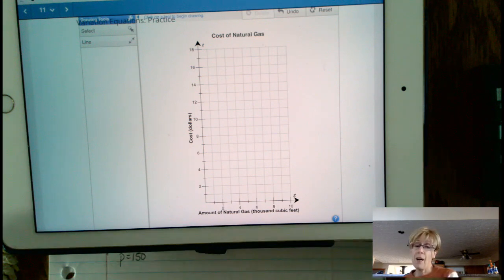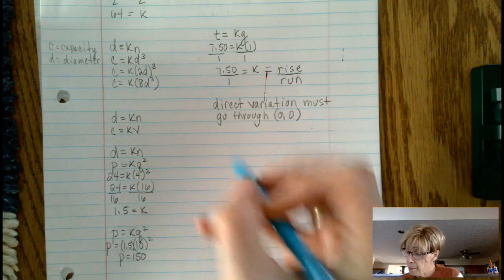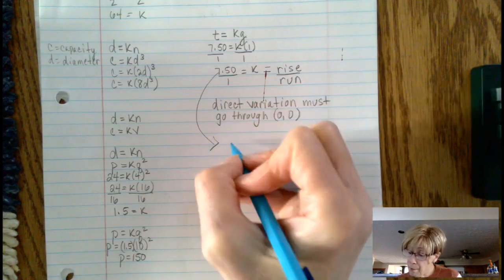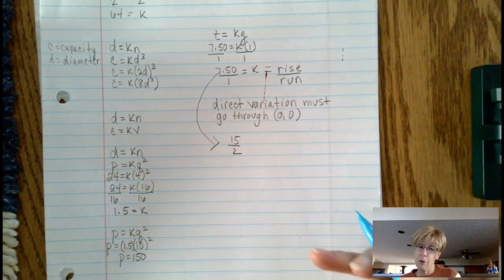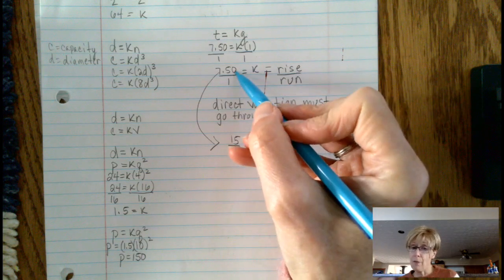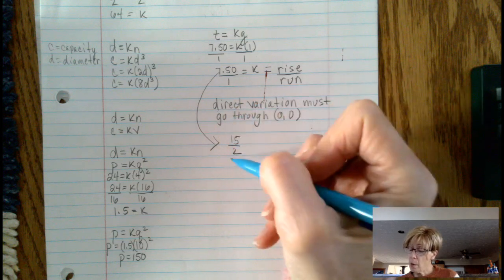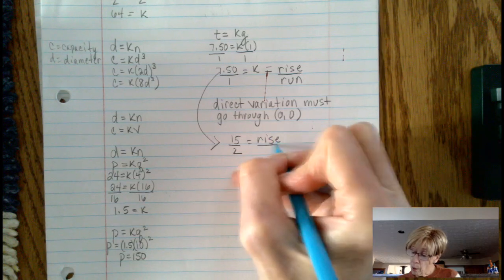Well, 7.50 over 1 is the same thing as 15 over 2. All that I did is I multiplied 7.50 times 2 and 1 times 2. And once I multiply those, it's still rise over run, which is still representing 7.50 over 1. But I'm going to start at 0,0.